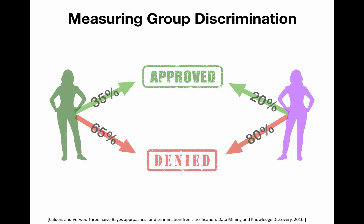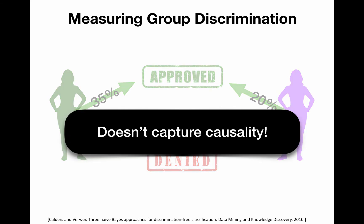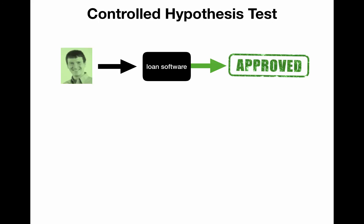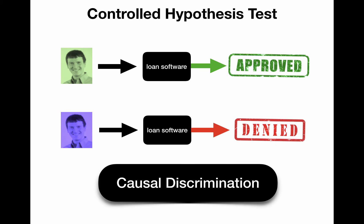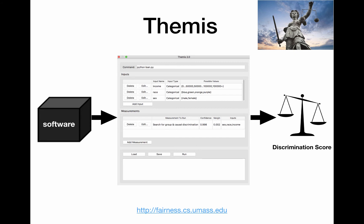Group discrimination can be useful, but fails to capture causality. When we ask, is our software fair, how do we really know if a sensitive input such as race causes a difference in software behavior? One way is to conduct a controlled hypothesis test. Suppose when we alter the race of a loan applicant who is approved, the output changes from approved to denied.